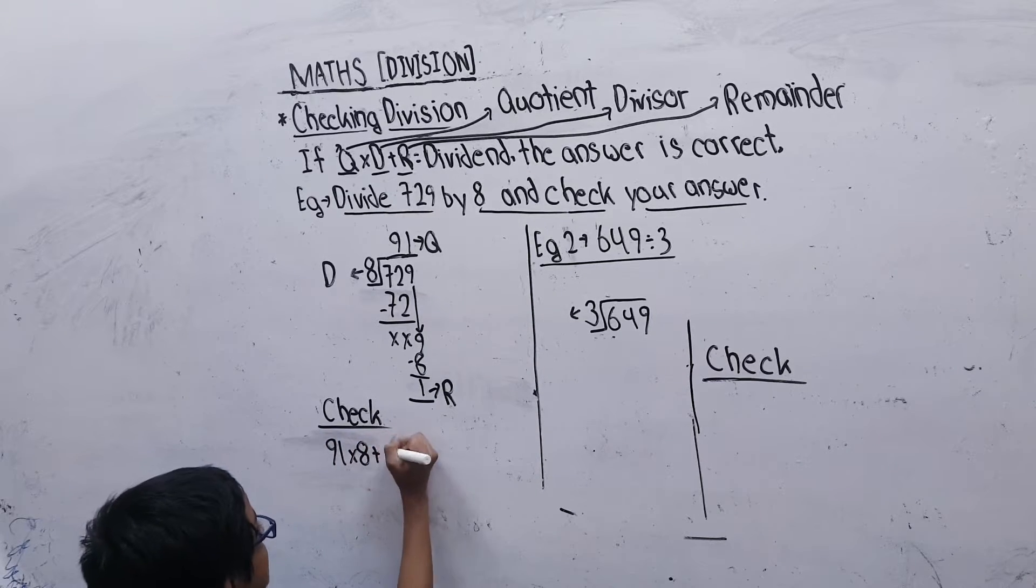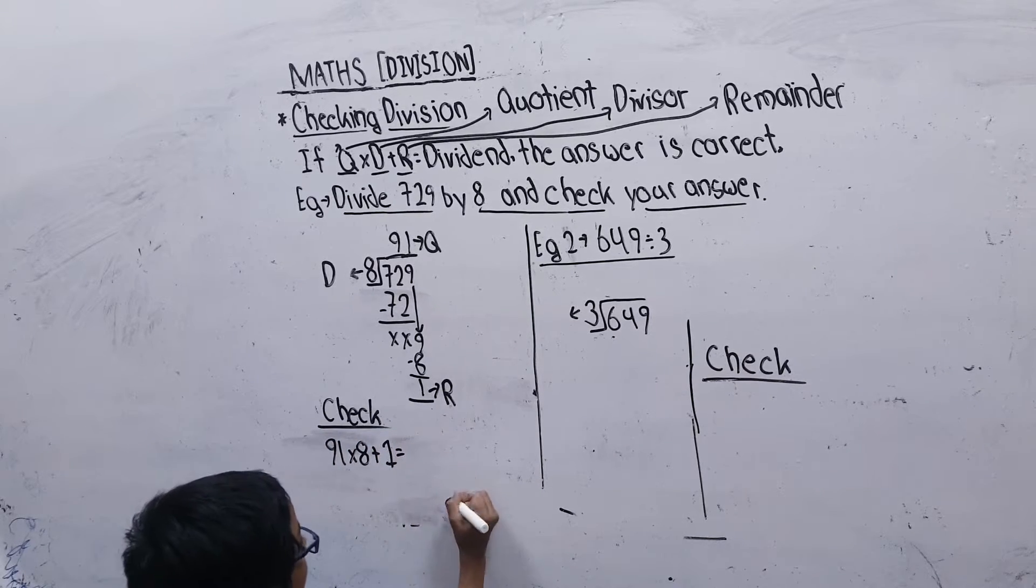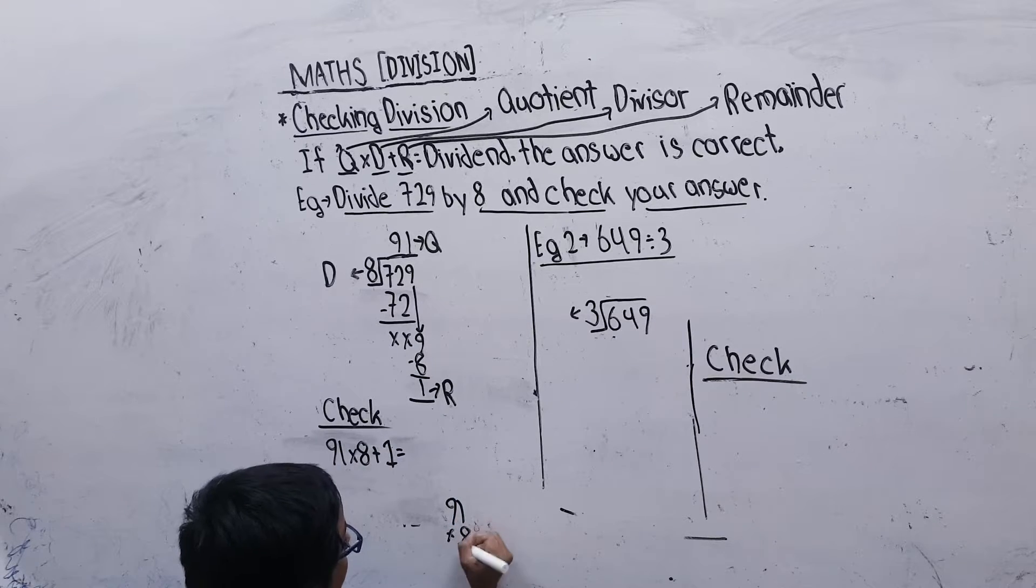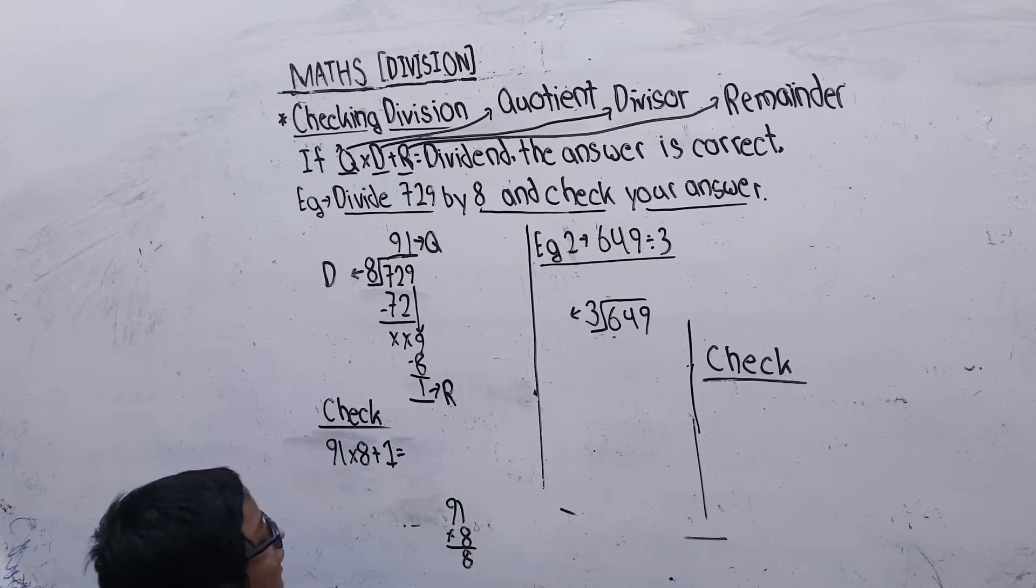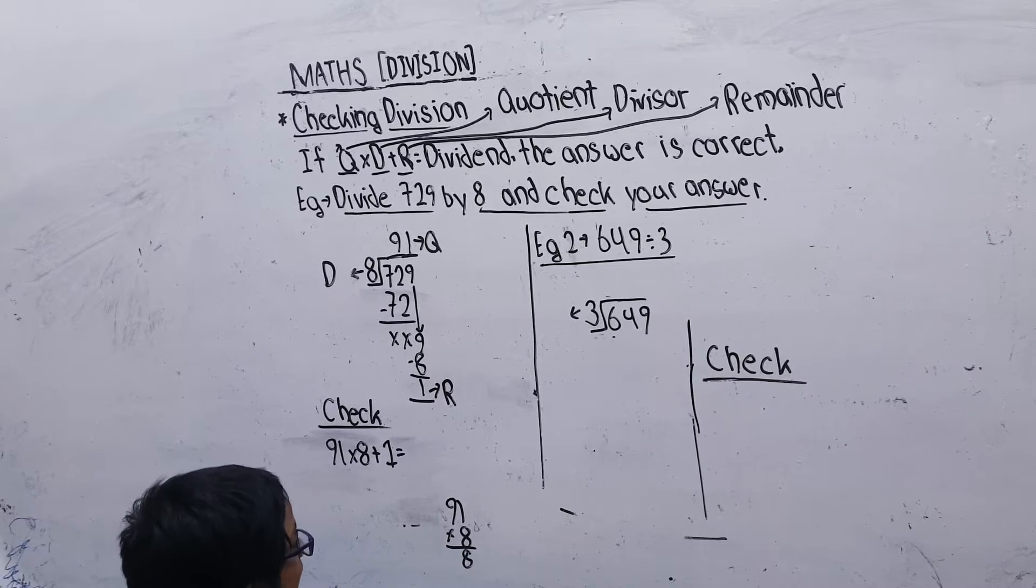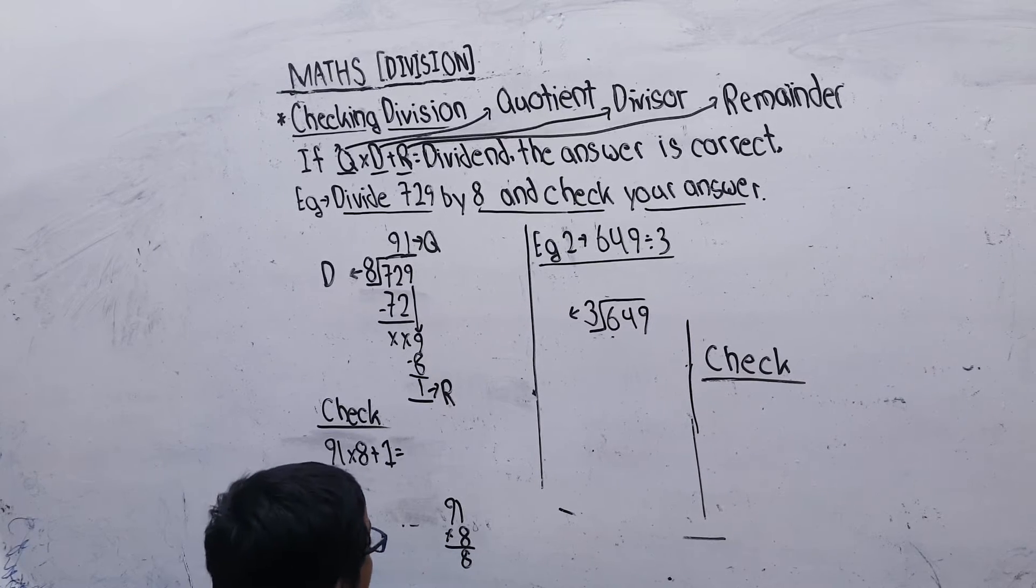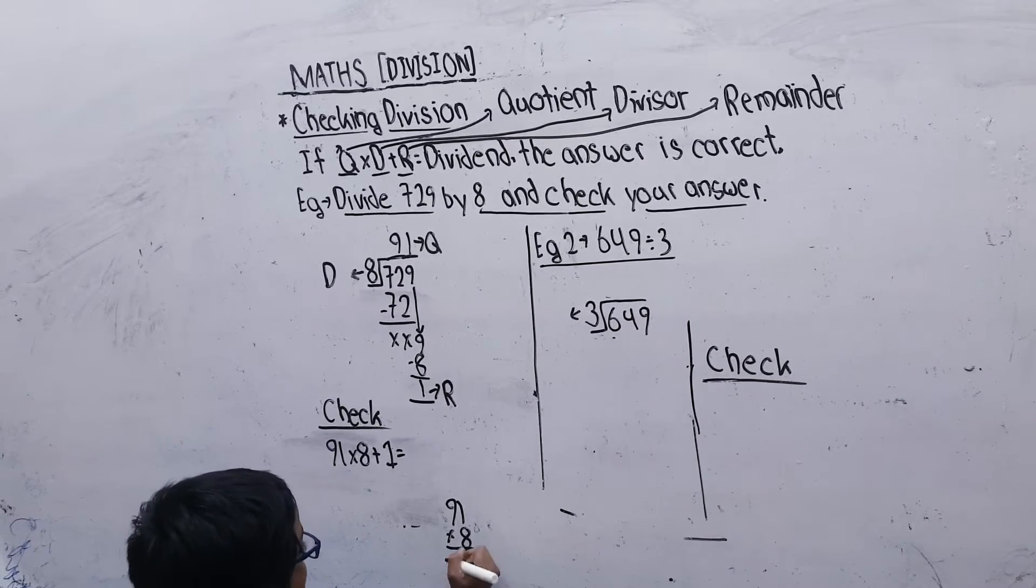We will multiply 91 by 8 plus 1. 91×8: 8×1=8, 8×2=16, 8×9=72. We are getting 728.